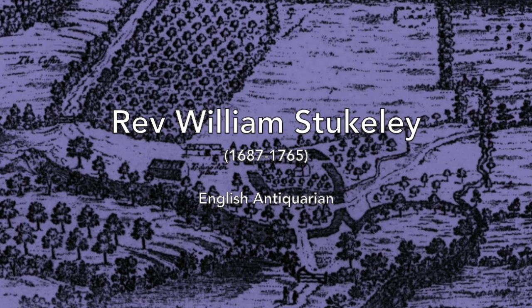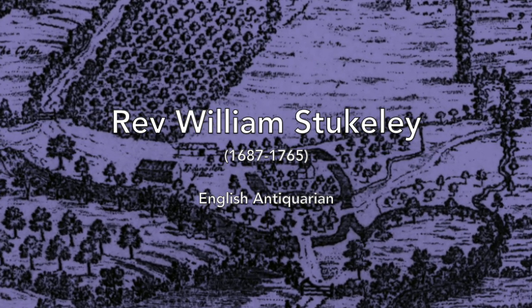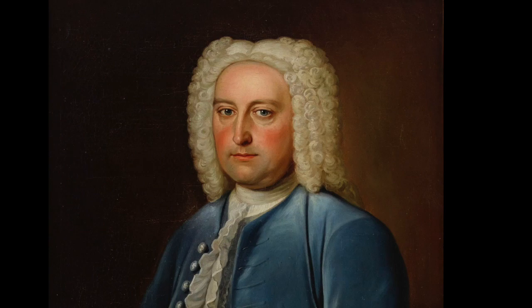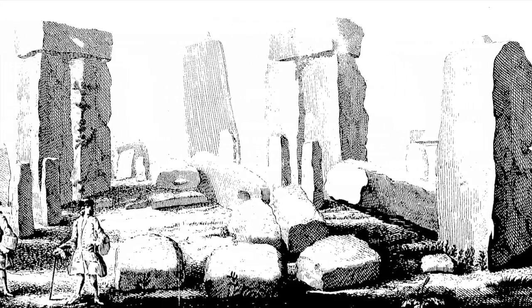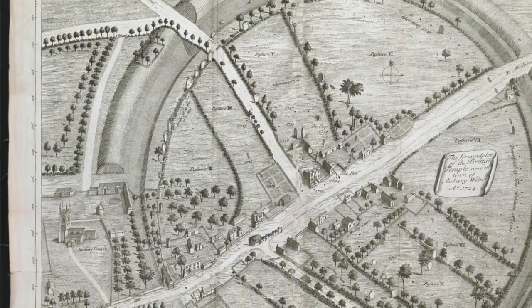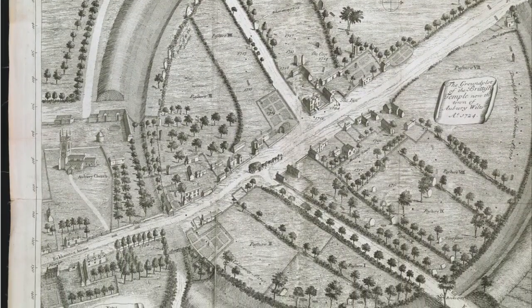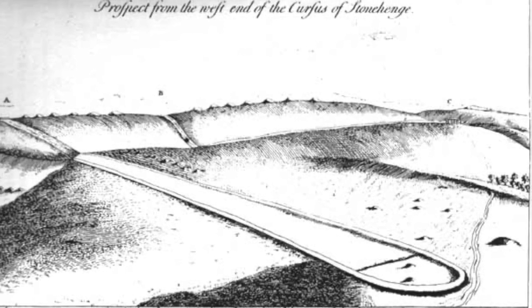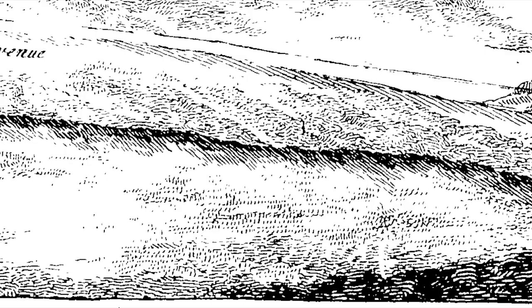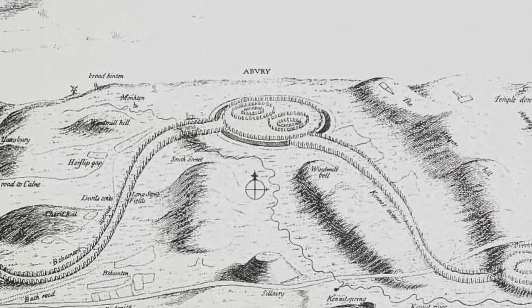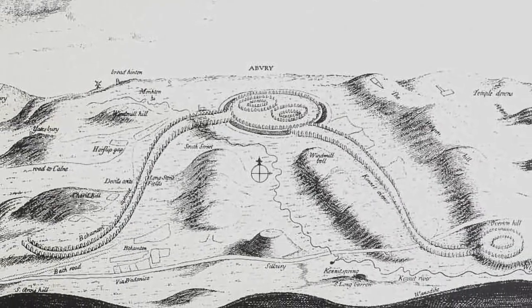One such individual was Reverend William Stukeley, an English physician and Anglican clergyman who was fascinated by the signs of antiquity in the English countryside. He's best known for his drawings and observations on Stonehenge and Avebury, but he also saw these monuments in their landscape context. For example, in the area around Stonehenge, he recorded the cursus and the avenue and numerous barrows, and he also showed how Avebury was related to other monuments and features in its neighbourhood.